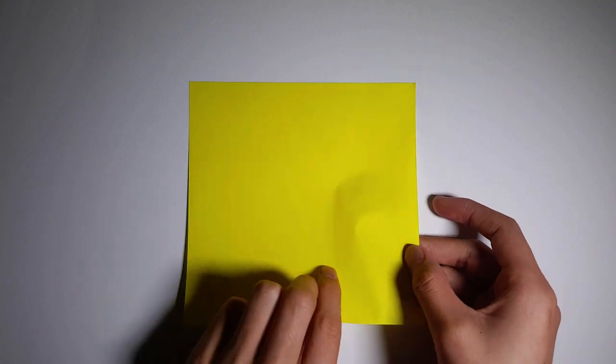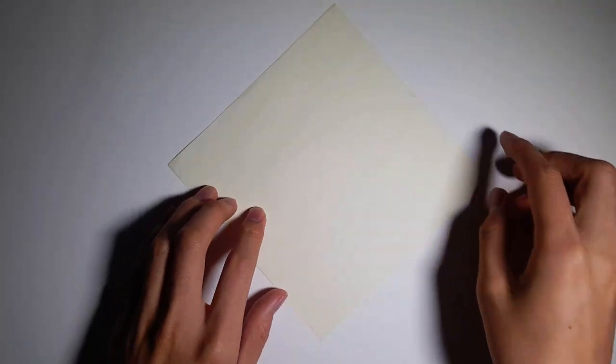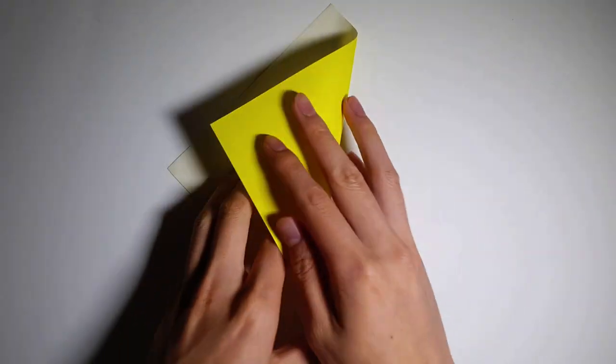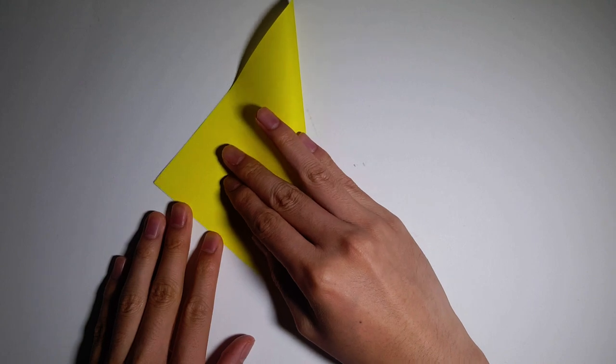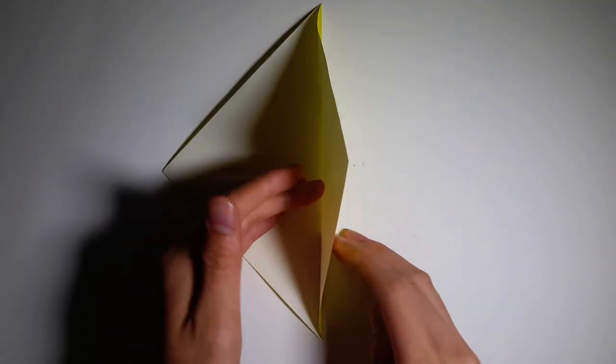Firstly we're going to have just one piece of paper color side facing up, and we're going to flip it so now it should be on the plain side. We're going to fold it horizontally and vertically like so, making sure we unfold after each one.